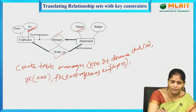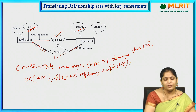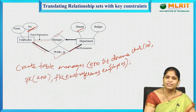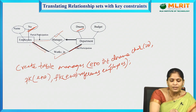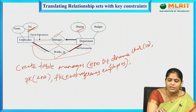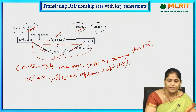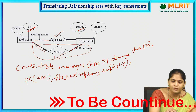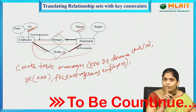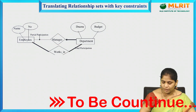The thick line in the ER diagram represents total participation — when all entities in the entity set participate in a relation. The thin line represents partial participation. For 'works in,' each and every employee works in some department — total participation is shown by the thick line. For 'manages,' only one employee manages a department — the thin line is drawn on the employee side. That is the basic difference. Thank you.